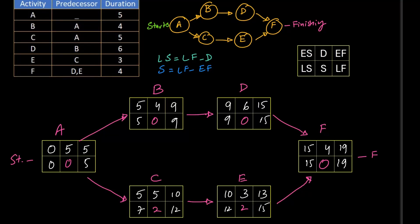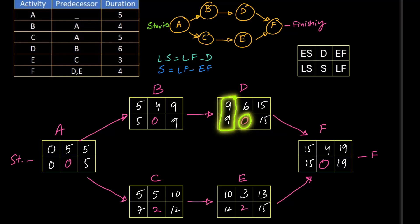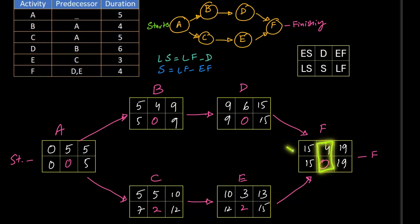Slack is the most important part of the CPM. If slack is 0, that particular activity cannot be delayed. It has to start and end at a particular time. For example, B has a slack of 0 means it can only start at week 5 and it has to be finished till week 9. Similarly, D has a slack of 0 means it has to start in week 9 and has to finish in week 15. F, the last activity, has a slack of 0 means 15th week will be the one that the F activity starts, until 19th week it shall finish.